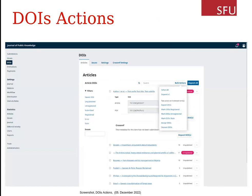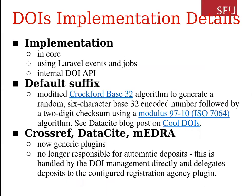There are bulk actions that can be applied to selected items. Items can be selected individually or using the select-all action. Bulk actions can be used to mark DOIs as registered, unregistered, or stale; to export an XML file; or to assign or deposit DOIs. There is also a Deposit All button that considers all items for deposit that meet the requirements — for example, if the item is published and has a DOI assigned. If an error message is returned when depositing a DOI, it will be stored and shown here. That would be all about statistics and DOIs — everything will be documented and hopefully clear from the documentation.